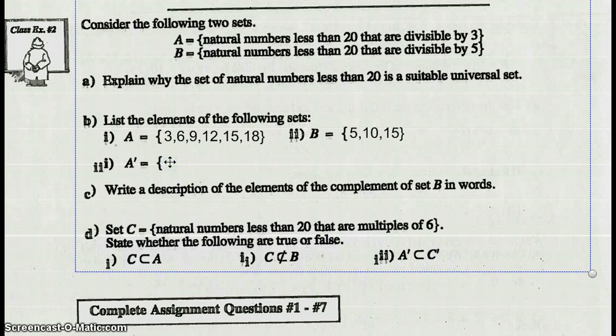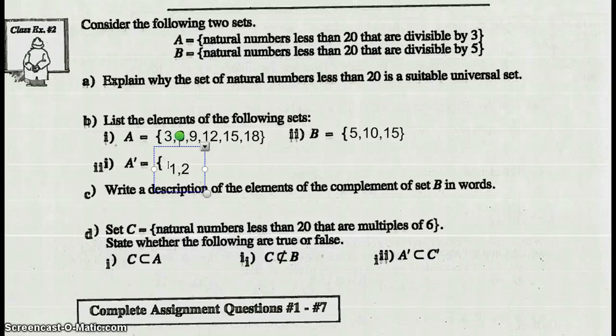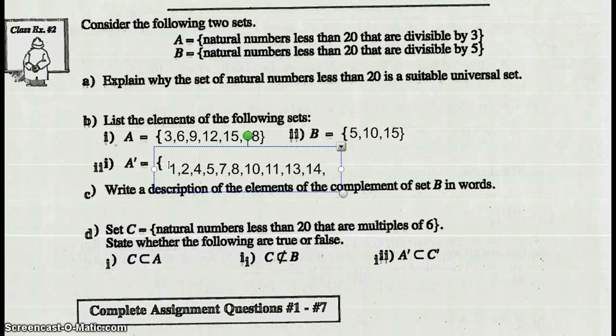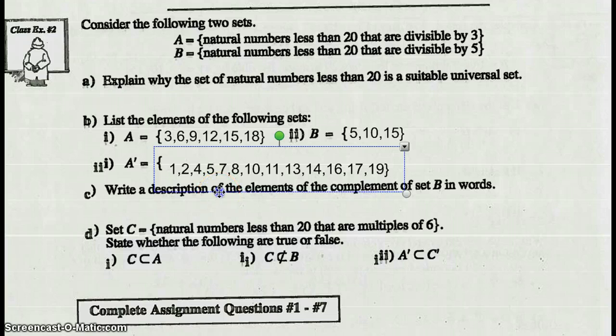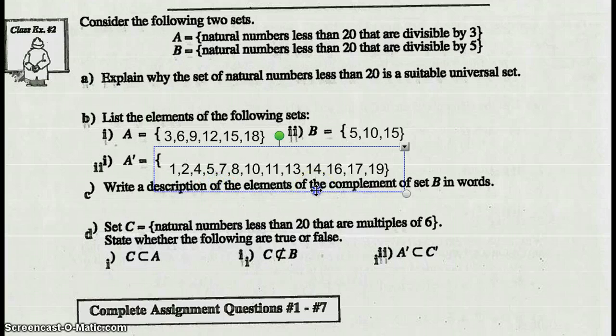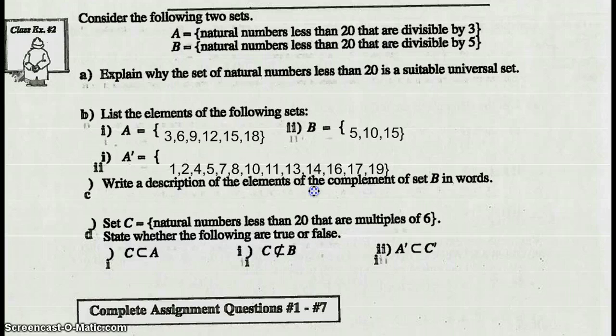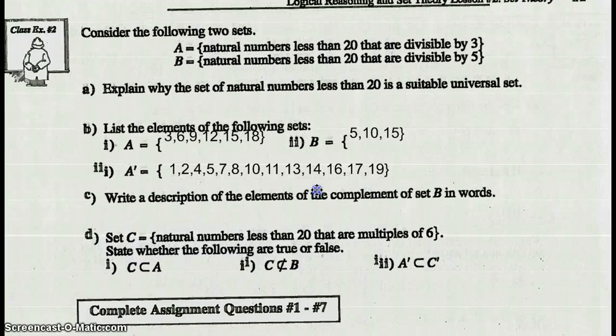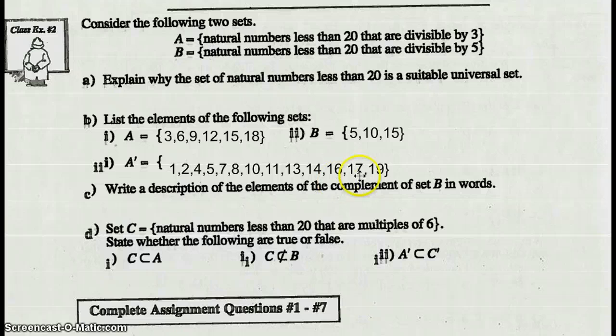And A prime, or the complement of A, natural numbers less than 20 that are divisible by 3. These would be the ones that are not divisible by 3: 1, 2, 4, 5, 7, 8, 10, 11, 13, 14, 16, 17, 19. All those are not divisible by 3 and they are less than 20 natural numbers.